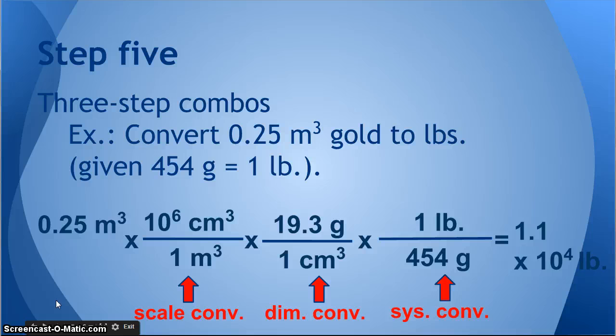Step six. This is a three-step problem. This is almost as complicated as it gets. Here I'm going to convert from 0.25 cubic meters of gold to pounds. This is fairly complicated. I'm going from a volume to a mass—technically this is a weight, but we'll consider it a mass for the purposes of this exercise. So I'm going from a volume to a mass. That means I need a dimensional conversion. I'm also going from metric to English, which means I'm going to need a system conversion.